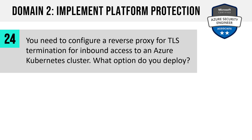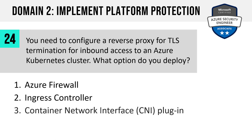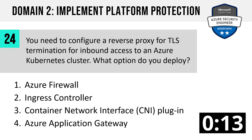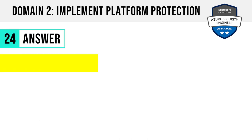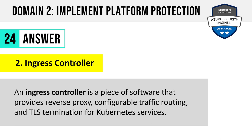Number 24. You need to configure a reverse proxy for TLS termination for inbound access to an Azure Kubernetes cluster. What option do you deploy? Azure Firewall, ingress controller, container network interface plugin, or Azure Application Gateway? The answer is two: ingress controller. An ingress controller is a piece of software that provides reverse proxy, configurable traffic routing, and TLS termination for Kubernetes services.